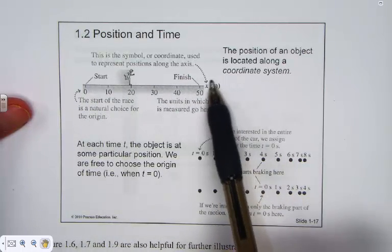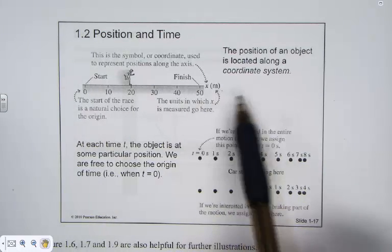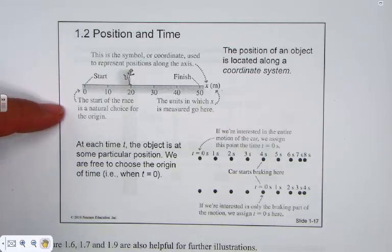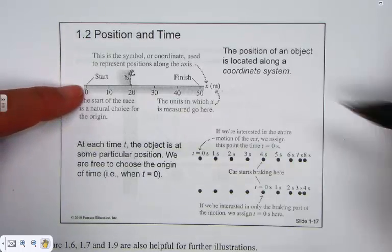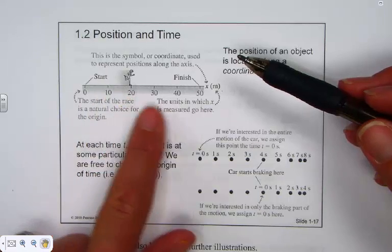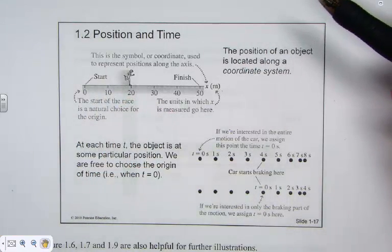the x axis here is representing meters or distance. The units in which x is measured are going to be labeled right on that coordinate system. The start of the race is a natural choice for the origin. This is my beginning point. This is where I'm going to finish. An equal distance has been marked off on this coordinate system.